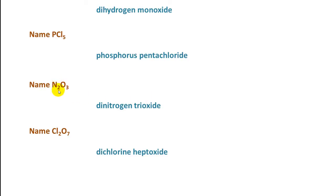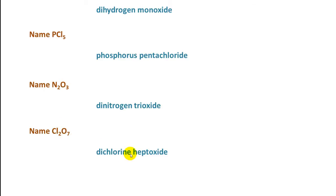Here we have two nitrogen atoms — that would be dinitrogen — and three oxygen atoms — that would be trioxide. So we have dinitrogen trioxide. Here we have two chlorine atoms and seven oxygens, so we have dichlorine. The prefix for seven is hepta. We drop the a because oxide begins with a vowel, and we end up with dichlorine heptoxide.